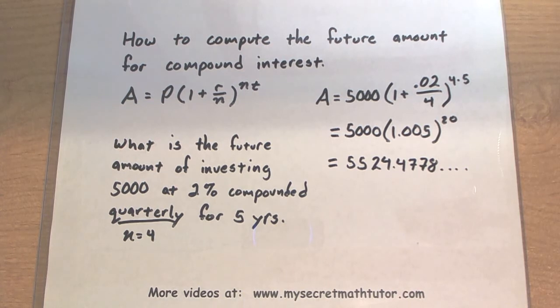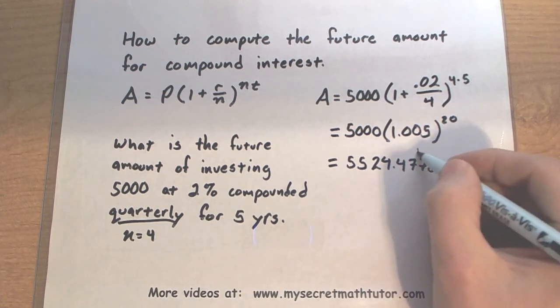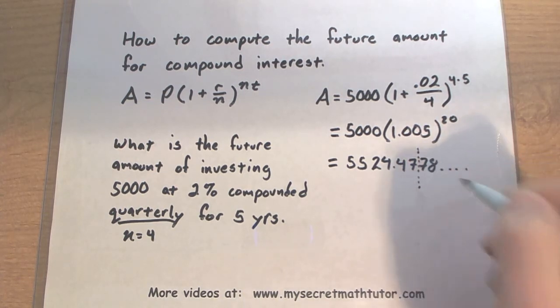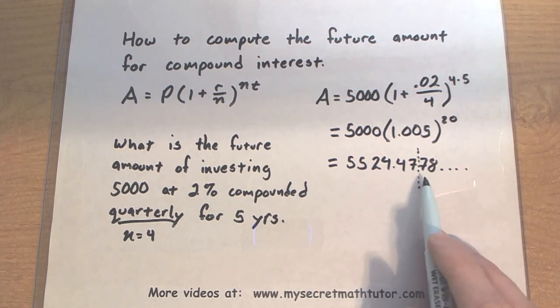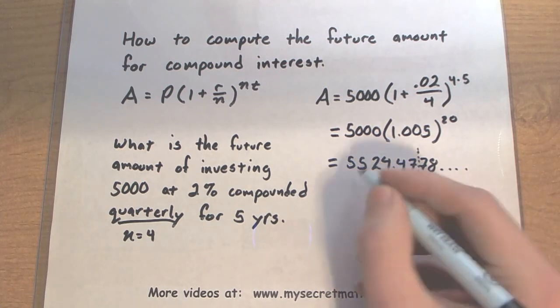Now since this is talking about money, we want to round this to the nearest cent. So we look at the seven. That's where we want to round it. Look to the digit right next to it. The seven is higher than five, so we're going to round up the seven.